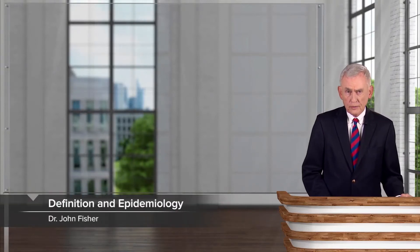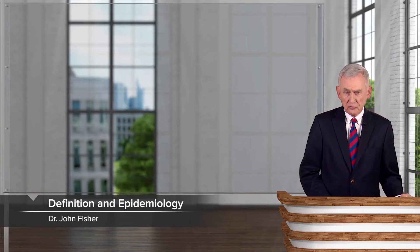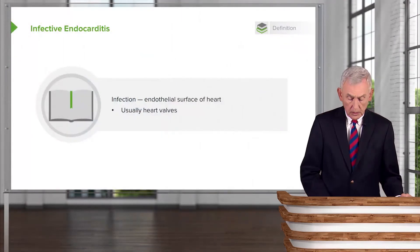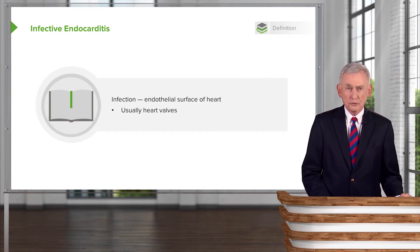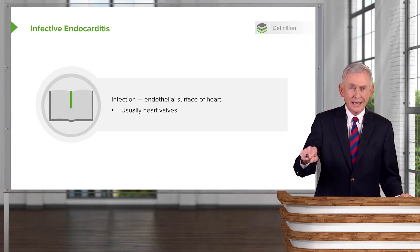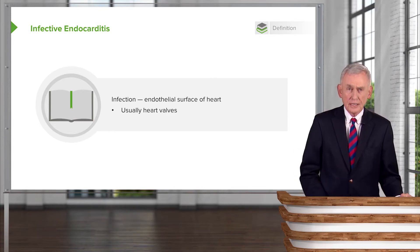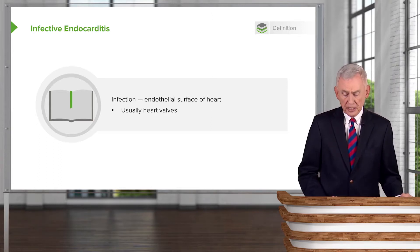In our discussion of cardiovascular infections, perhaps the most important is that of infective endocarditis. It's defined as an infection of the endothelial surface of the heart, and that's usually heart valves. But if you think about it, if you have a persistent infection anywhere in the vasculature, it could produce something similar to infective endocarditis.